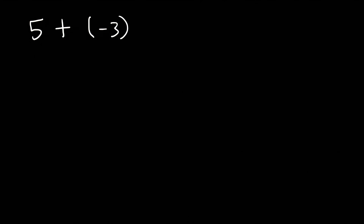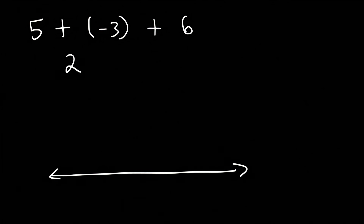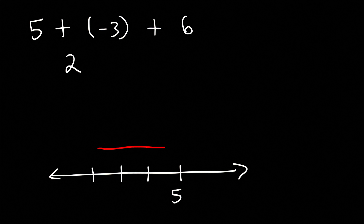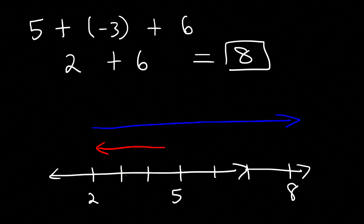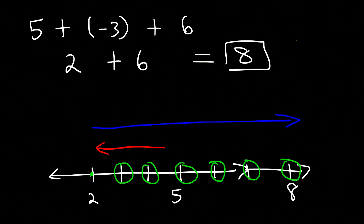Sometimes you may need to add three numbers. What is 5 plus negative 3 plus 6? First, 5 plus negative 3 equals positive 2 — starting at 5 and traveling three units to the left brings you to 2. Next, add 2 and 6 by traveling six units to the right from 2, landing on 8. So 5 plus negative 3 plus 6 equals 8.